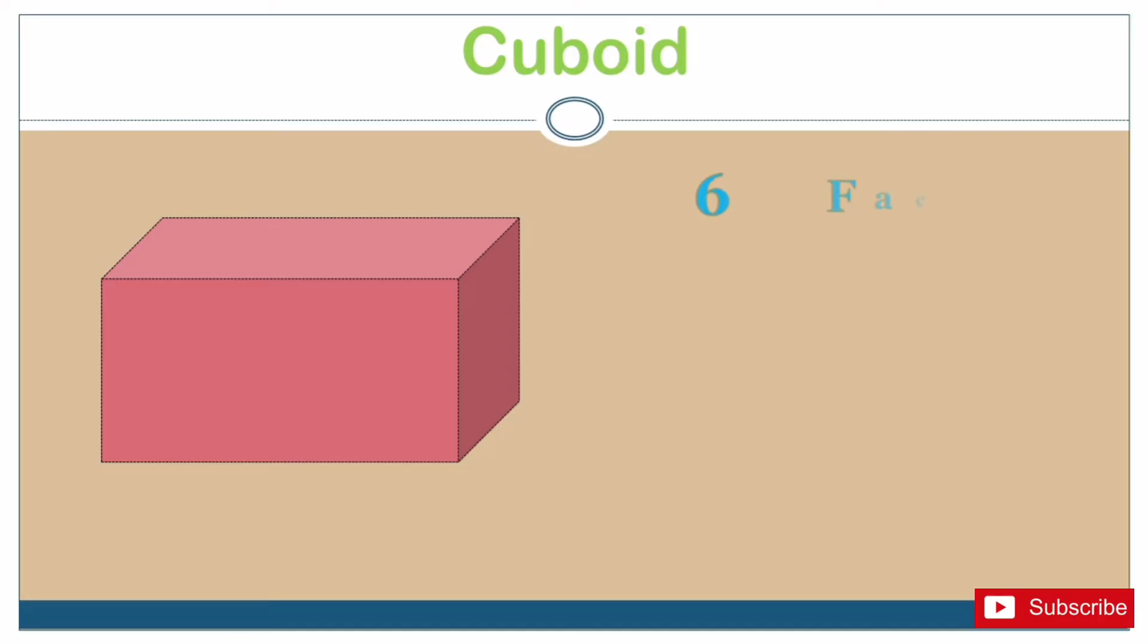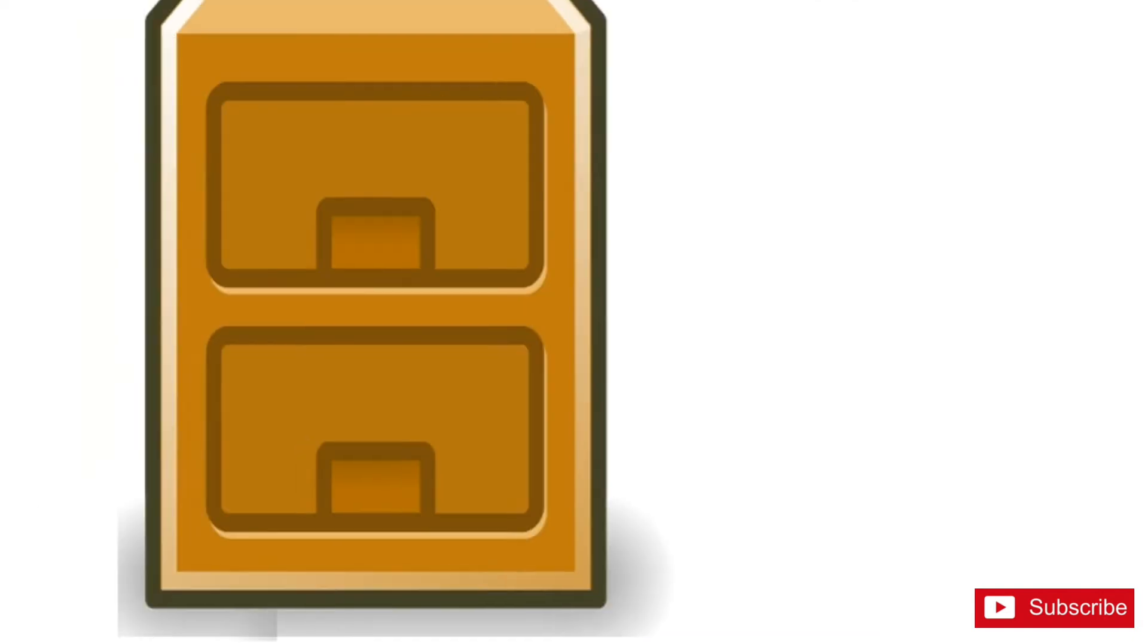Cubes. Now let's look at the cuboid. A cuboid has six faces, eight vertices and 12 edges. All of these objects are cuboids.